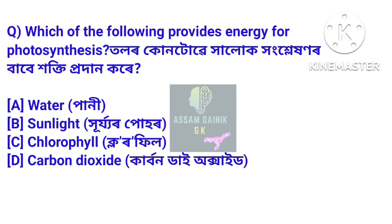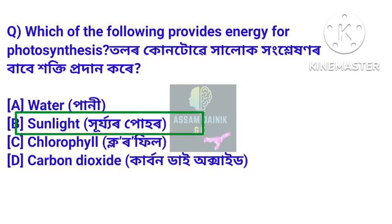Which of the following provides energy for photosynthesis? Answer: Sunlight. Sunlight is the primary energy source for the process of photosynthesis.